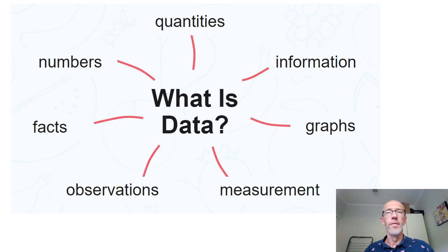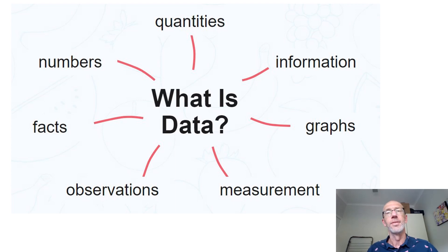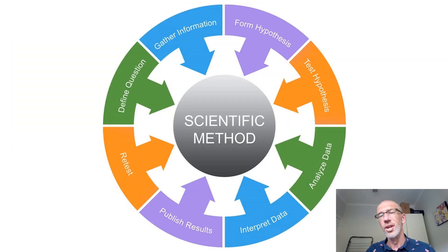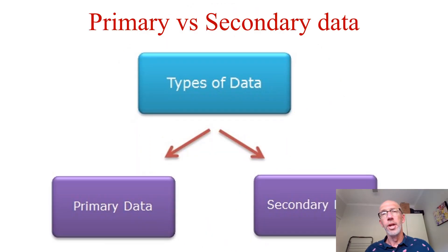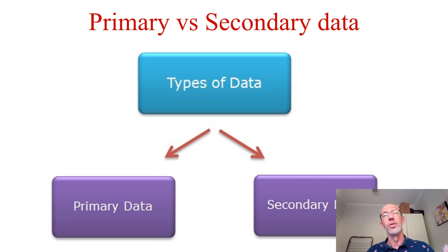Before we get into evaluating types of data, let's look at what data actually is. Data is simply a set of facts that we gather in order to evaluate and analyse. It's the key ingredient of the scientific method because after we've conducted a hypothesis, we need to analyse and interpret the data generated from our testing. When we're interested in psychological research, we've got some decisions to make in terms of the types of data we're going to work with.